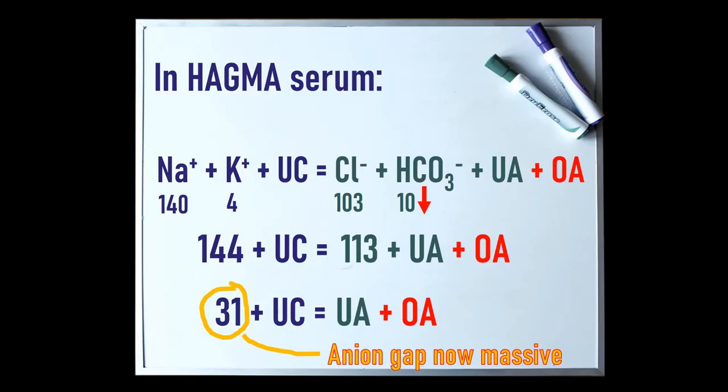HAGMA occurs due to the presence of organic acids. Chuck them into the equation. Now they will come with their own hydrogen ions because they're acids. So the bicarbonate buffer system kicks off — the bicarb goes, thank you very much, and disappears as it tries to buffer the hydrogen ions. This leaves the anion from the organic acid. It has a big presence on this side of the equation. Putting the numbers in now shows that the anion gap is massive. This whole scenario is what HAGMA is.